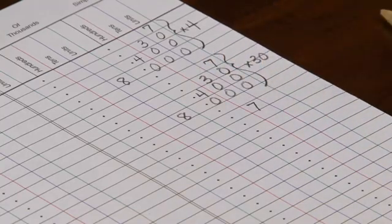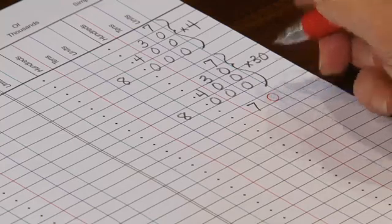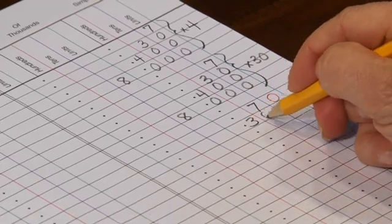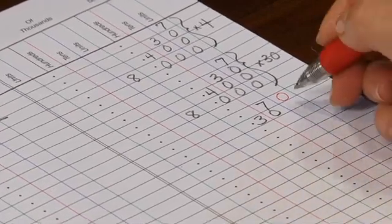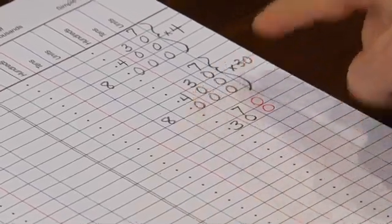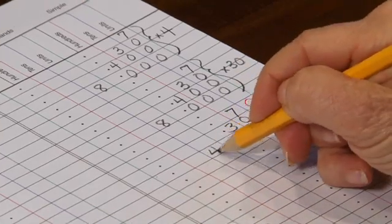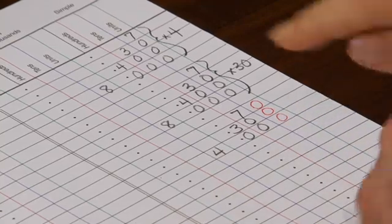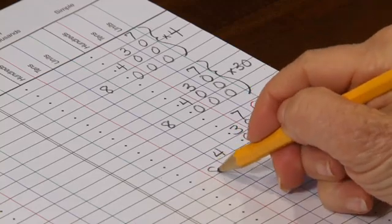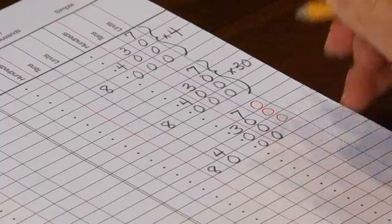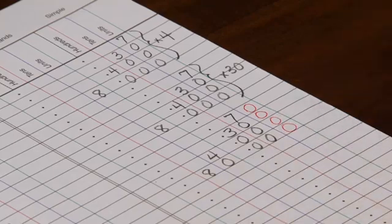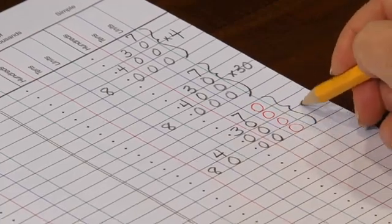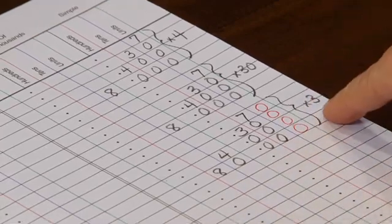So 7 taken 10 times is 70. 30 taken 10 times is 300. 400 taken 10 times becomes 4,000. And 8,000 taken 10 times becomes 80,000. So I've rewritten this problem, multiplied everything by 10, and now all I'll have to do is multiply everything by 3.